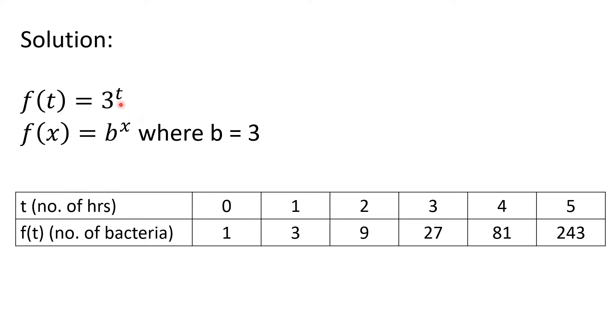Let us begin. If T is equal to 0, then this will become 3 to the 0, and any number that is raised to 0 is equal to 1. So if T is 0, F of T is 1. If T is equal to 1, this will become 3 to the 1st power, equals 3. If T is equal to 2, that's 3 squared equals 9.